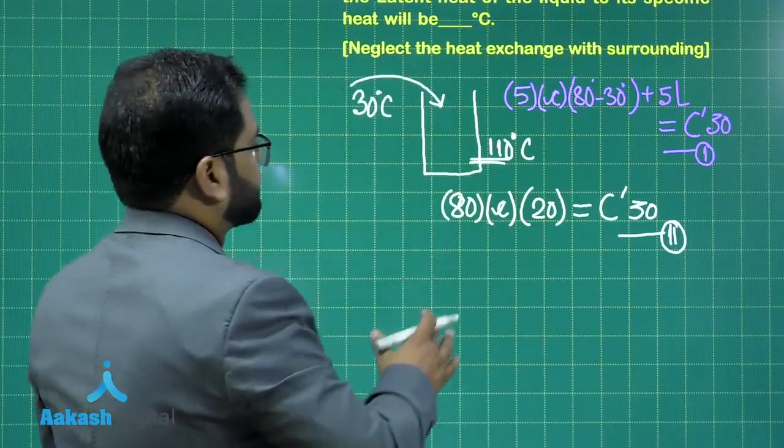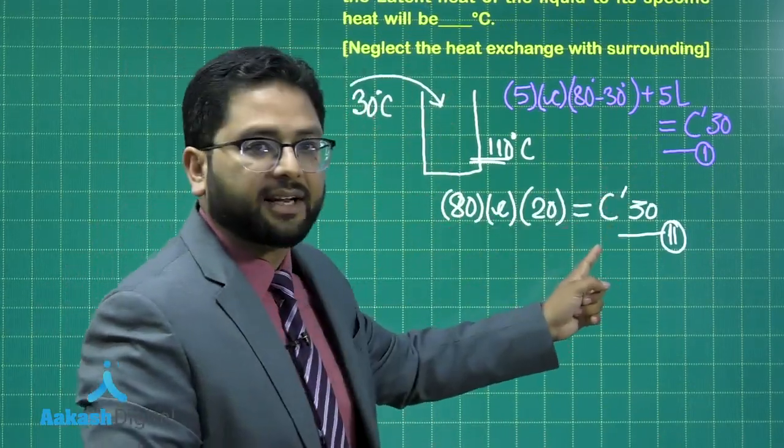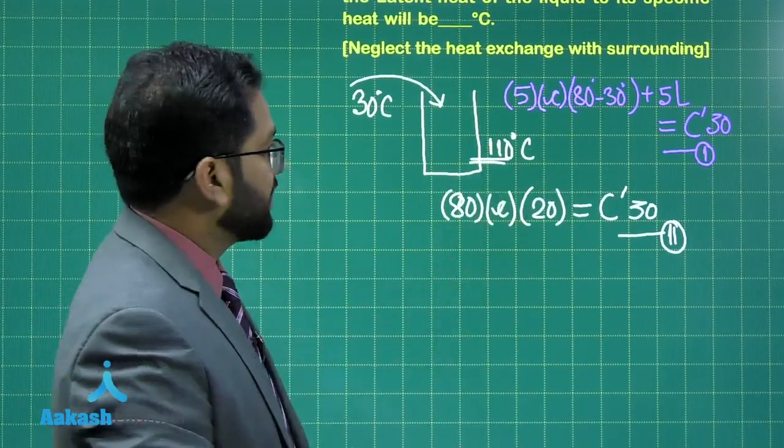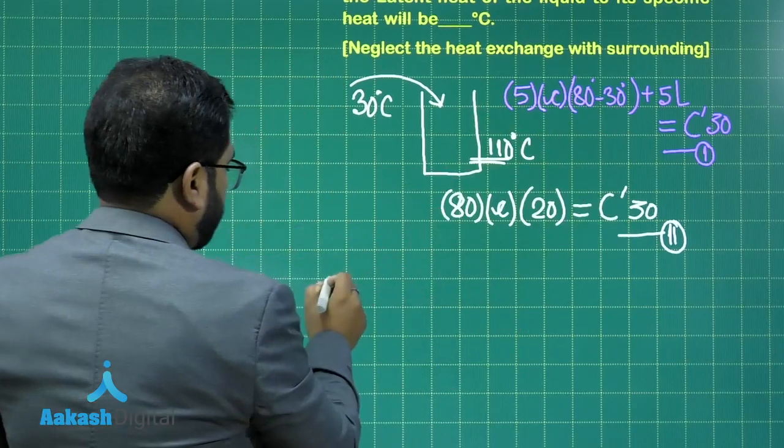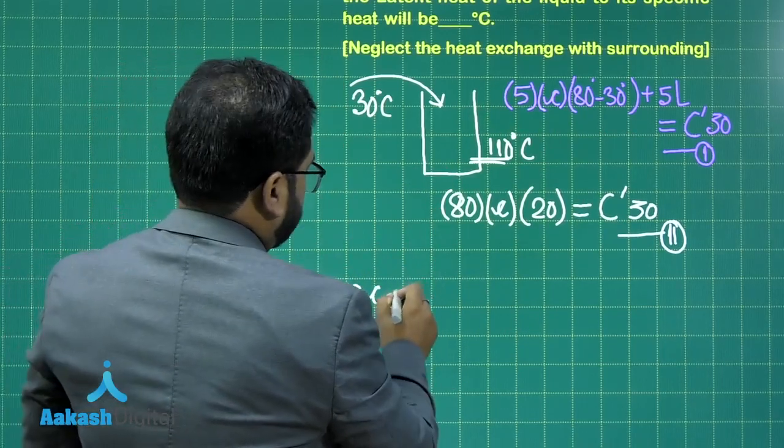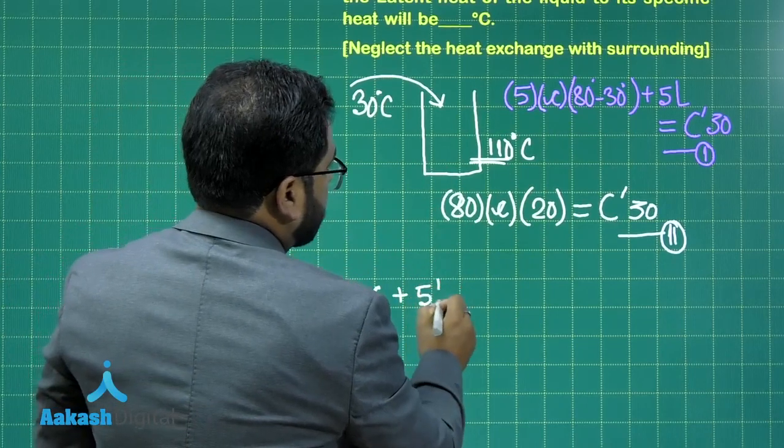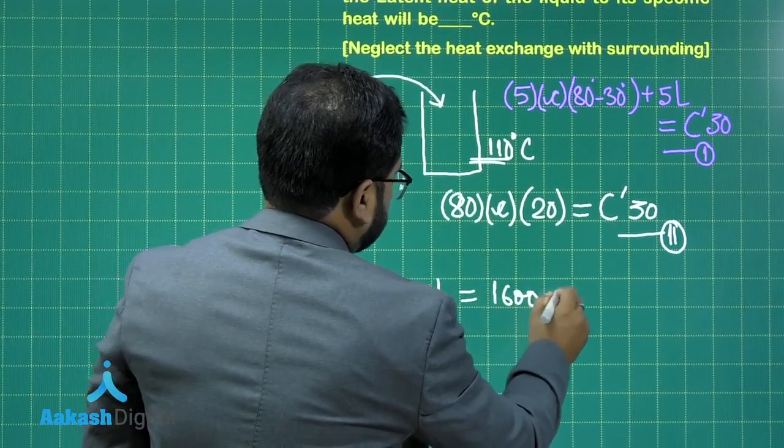So these are the two equations. Since the right hand side is exactly identical, we can equate it. So if we equate, that comes something like this: 50 into 5, that's 250 C, plus 5 times L, and that would be equals to 1600 C.